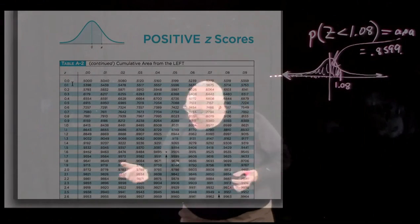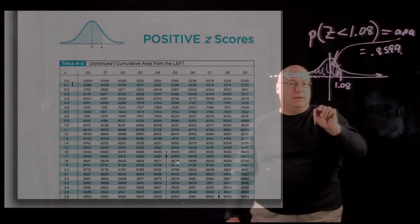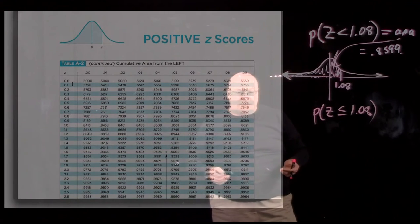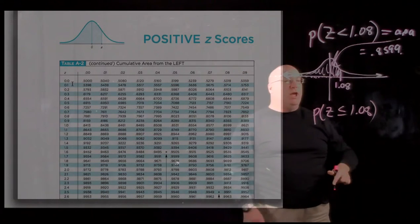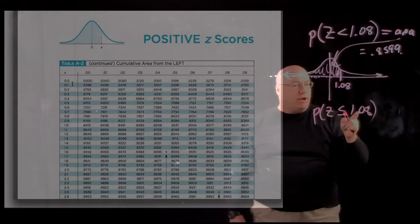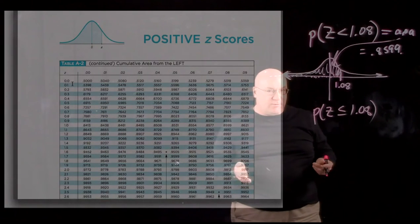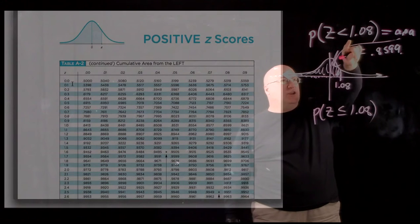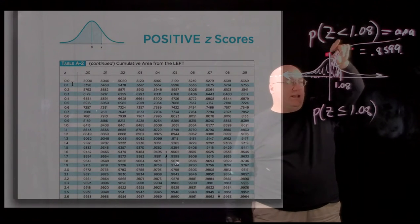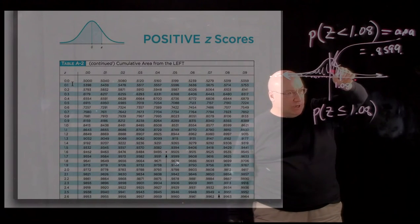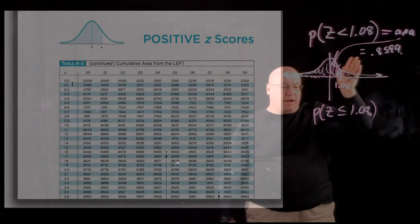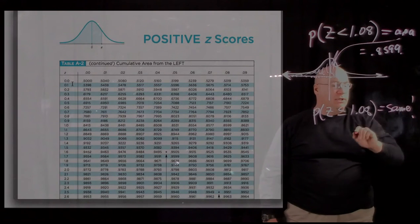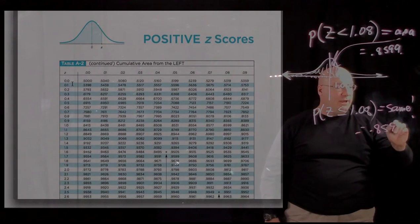For a continuous random variable, P(Z < 1.08) equals P(Z ≤ 1.08) — whether we include the equals sign or not doesn't change the probability, because we're adding or removing an infinitely narrow strip with zero area. The answer is the same: 0.8599.